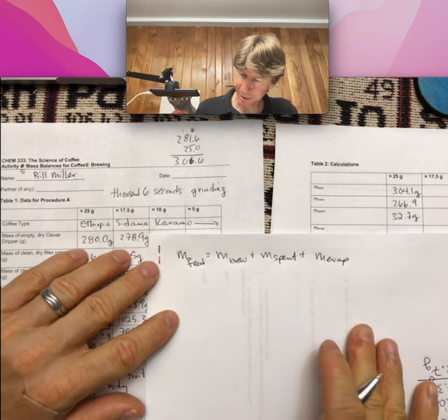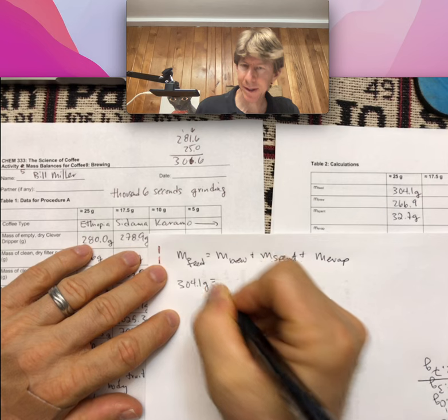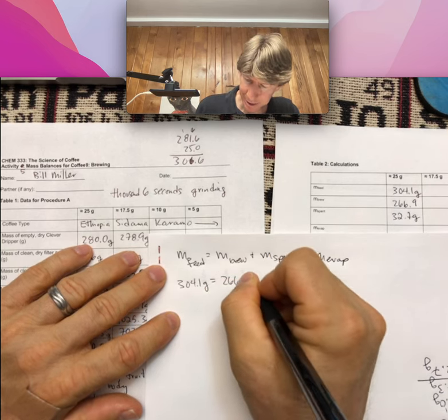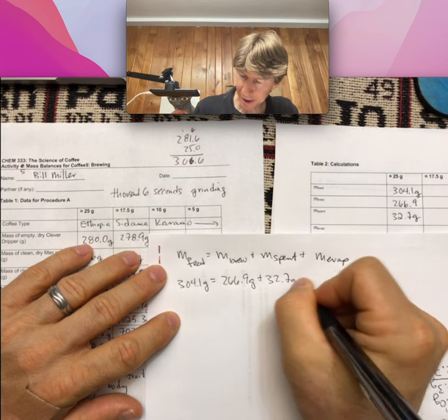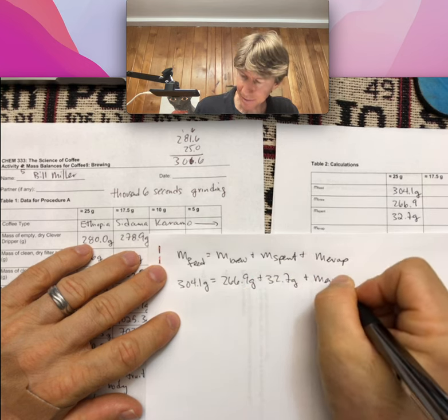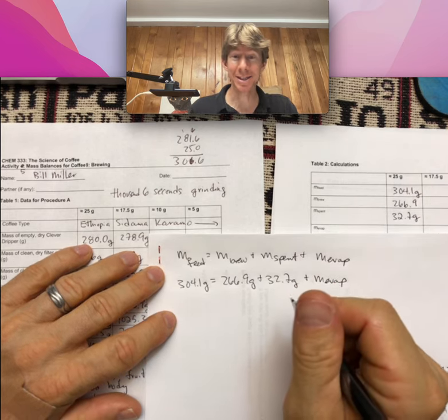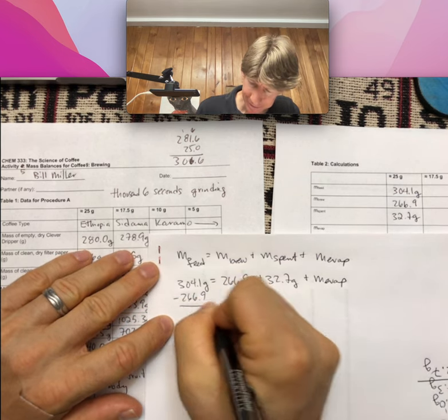To do this calculation, we know the M_feed equals M_brew plus M_spent plus M_evap. And we've got all these numbers. We've got M_feed is 304.1 grams, M_brew is 266.9 grams, spent is 32.7 grams, and M_evap.